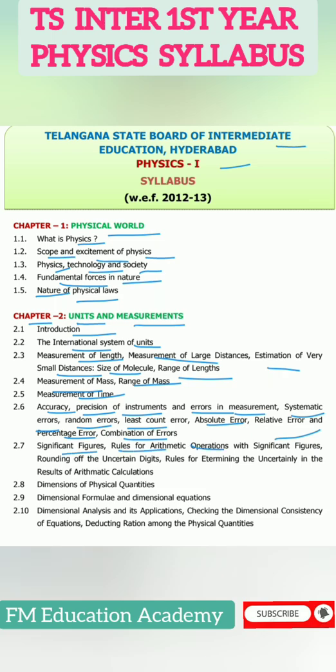Rules for arithmetic operations with significant figures, rounding of the uncertain digits, rules for determining the uncertainty in the results of arithmetic calculations, dimensions of physical quantities, dimensional formulae and dimensional equations, dimensional analysis and its applications, checking the dimensional consistency of equations, deducing relation among physical quantities.